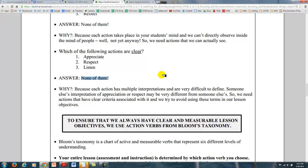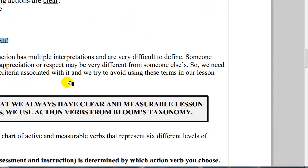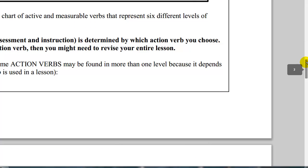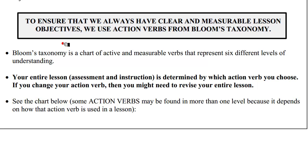One person's interpretation of appreciation or respect may be very different from another's. So we need actions that have a clear criteria associated, and we try to use these terms in our lesson objectives. To ensure that we always have a clear and measurable lesson objective, we always use action verbs from Bloom's Taxonomy. It's not to say that understanding, appreciating, and respecting aren't important — we just use action verbs to represent those.